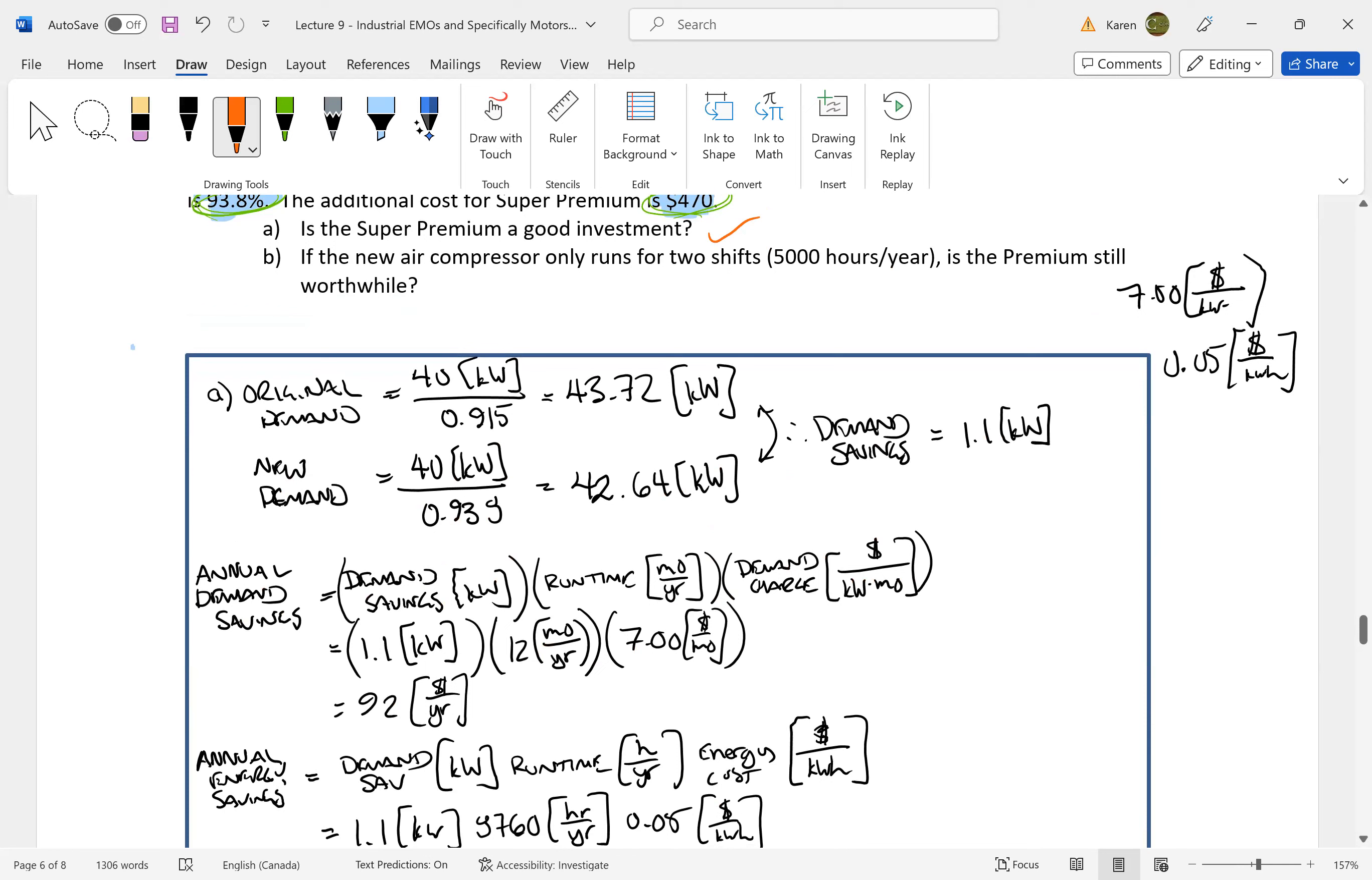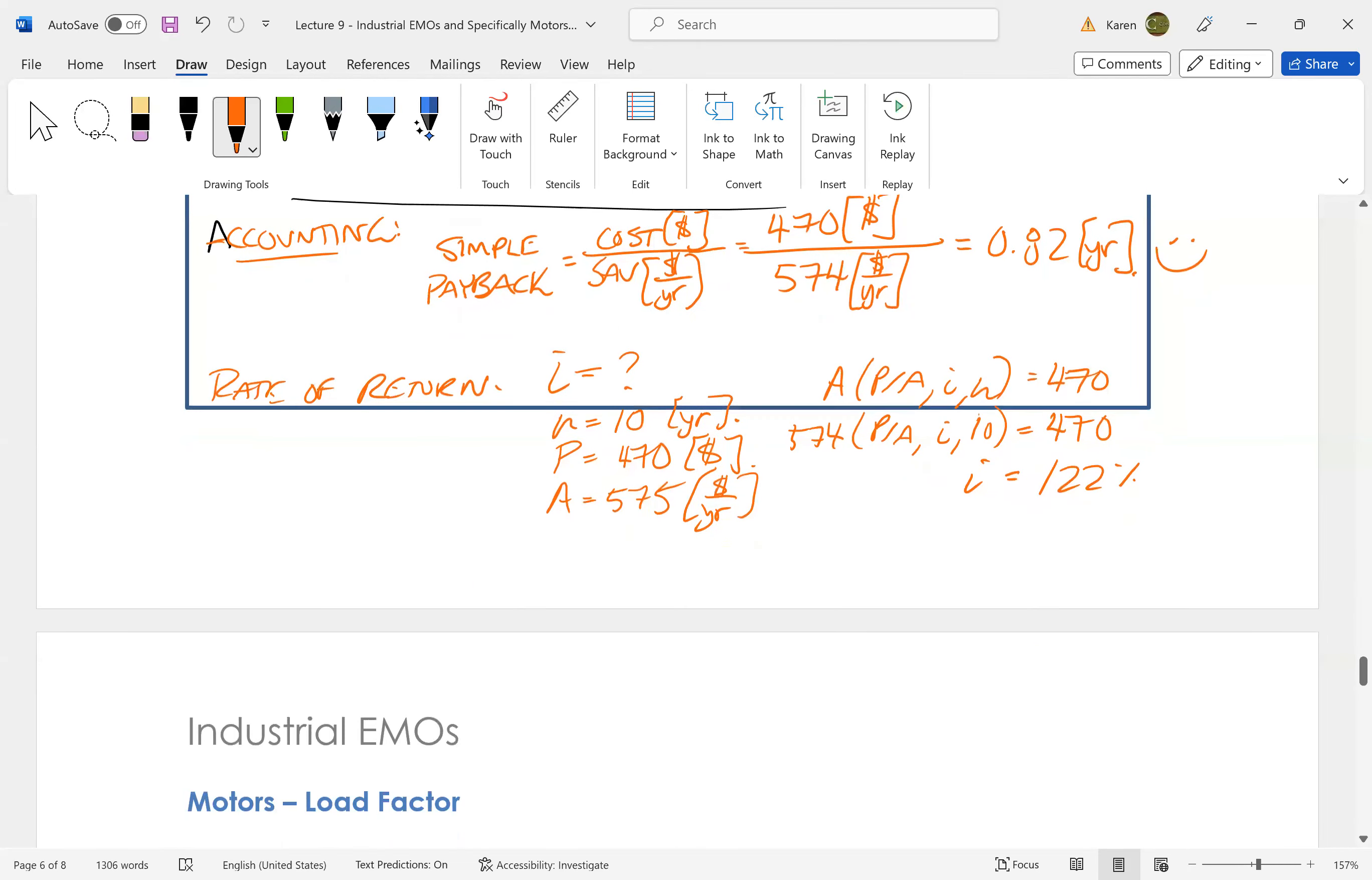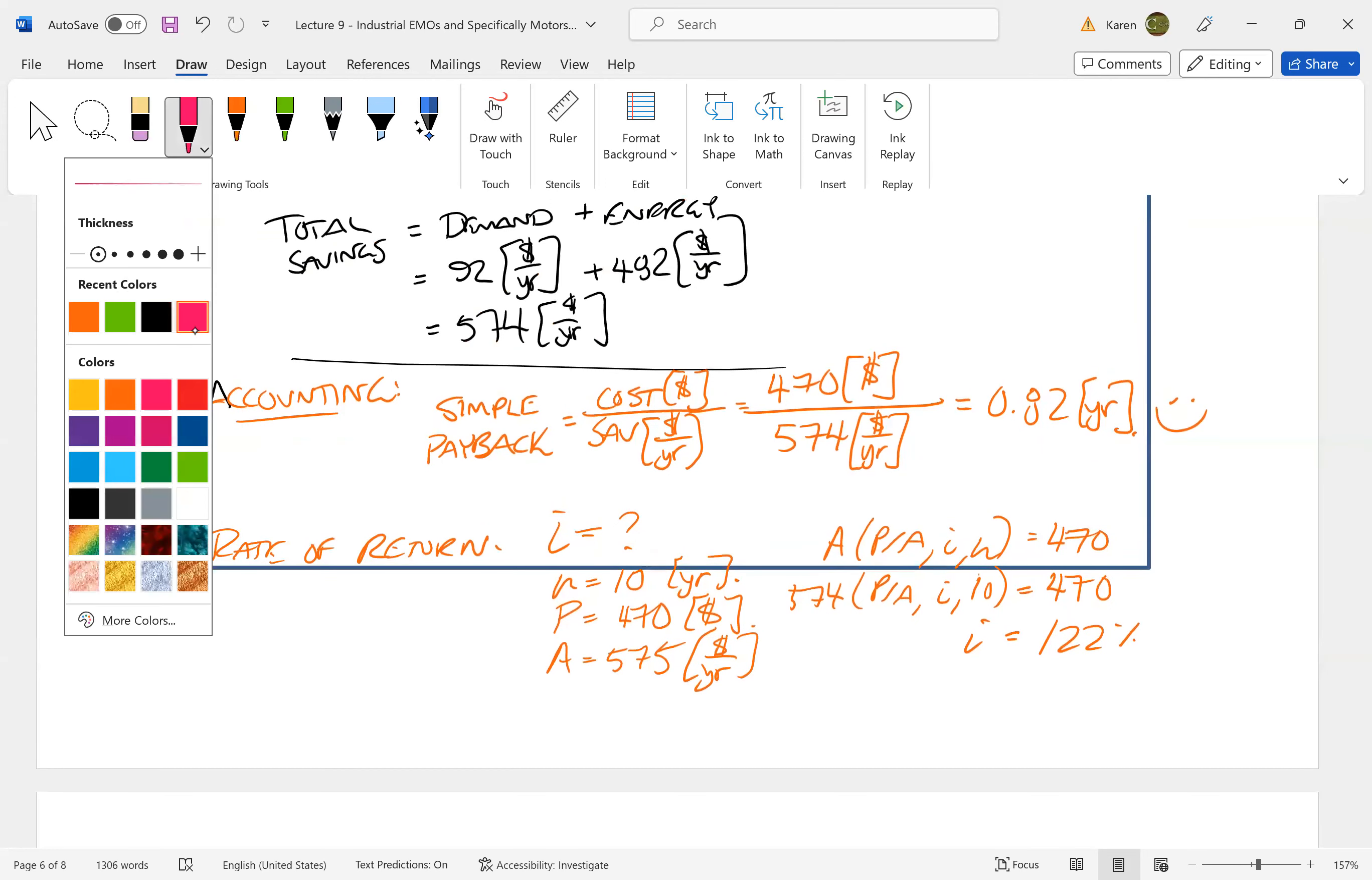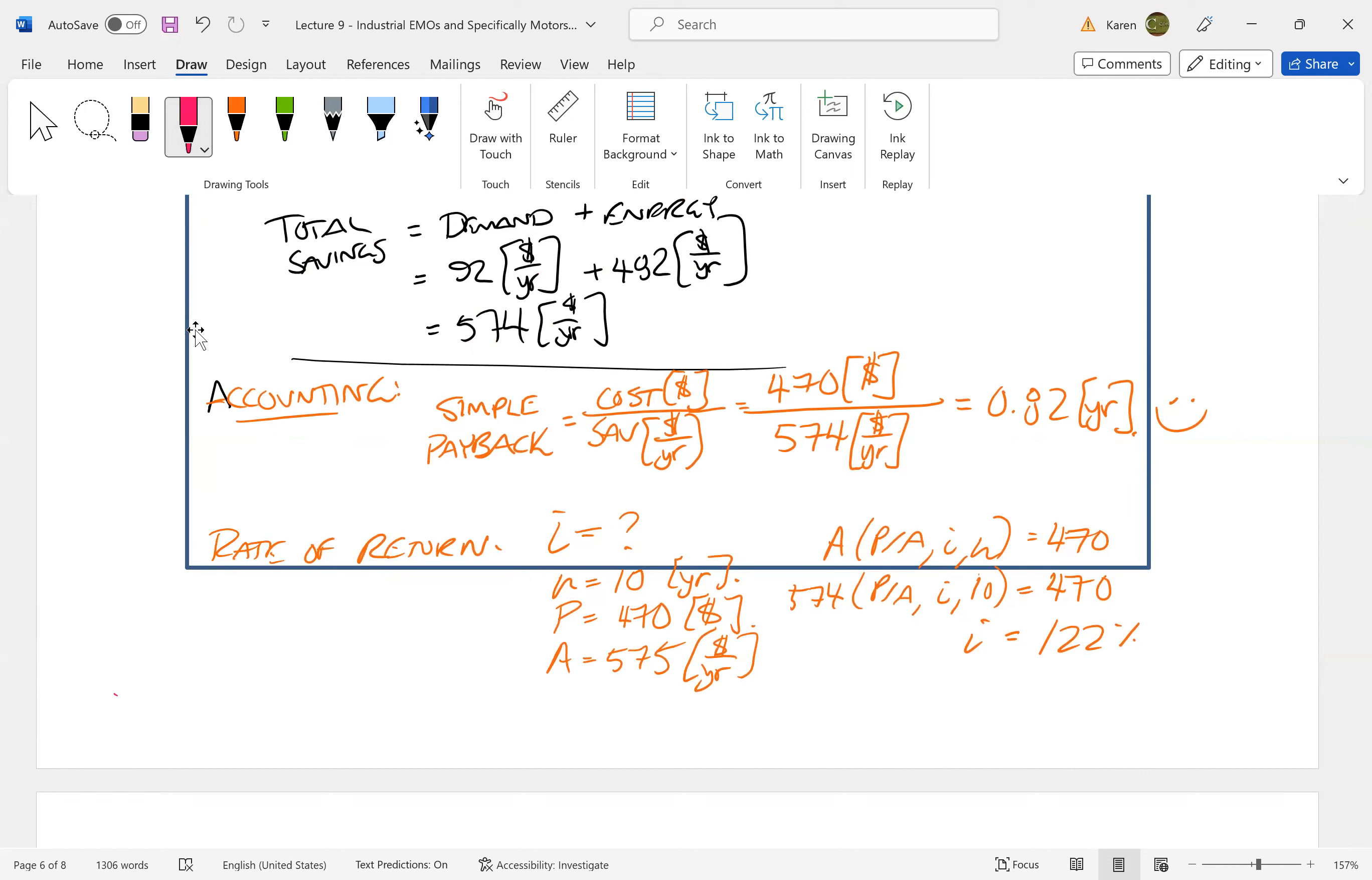If the new air compressor only runs for two shifts, so it only runs 5,000 hours a year, is that still worthwhile? Because remember what we're saying here is that motor investments are good because they run for a long time. Let's see if it only runs 5,000 hours a year—then the demand savings are unchanged.